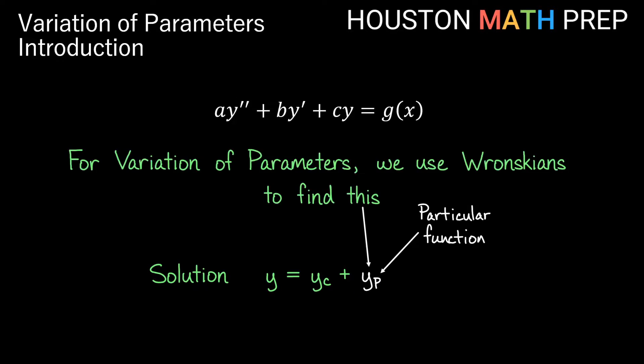For the variation of parameters method, we use what are called Wronskians to find the particular solution. Variation of parameters is actually a combination of the reduction of order method and Cramer's rule from algebra. Since we'll be using Wronskians in this video, make sure you know how to take determinants of square matrices before going through the method.